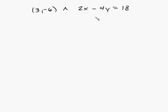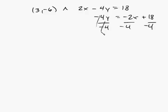So we'll subtract 2x from both sides so you get negative 4y is equal to negative 2x plus 18. I write the x part first. So now I'm going to divide by negative 4. This cancels with this and the negatives cancel out here.